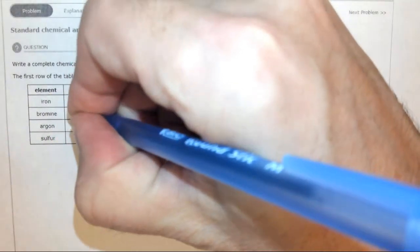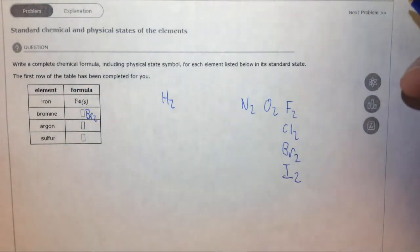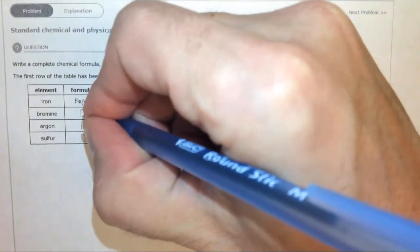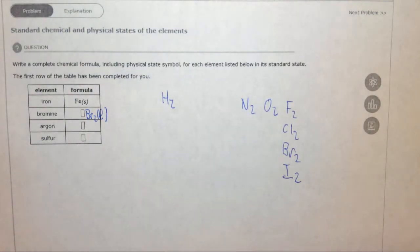So bromine is Br2. Bromine is also unique because it's one of only two elements that's a liquid at room temperature, so it's Br2 liquid. The other element that's a liquid at room temperature is mercury, which is a liquid metal as you probably know.